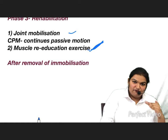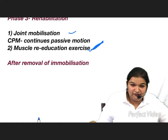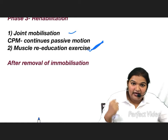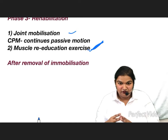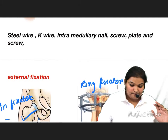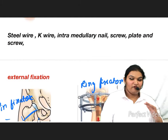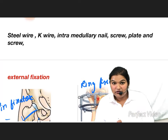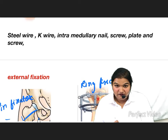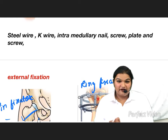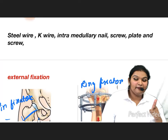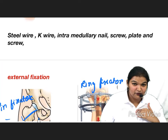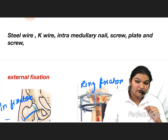Muscle re-education exercise is done after removal of immobilization. The muscle has undergone wasting during immobilization, and regular exercise helps it regain its pre-trauma condition. These are the fundamental principles for management of closed fractures. The next video will cover management of open fractures and their classification: types one, two, three-A, three-B, and three-C.